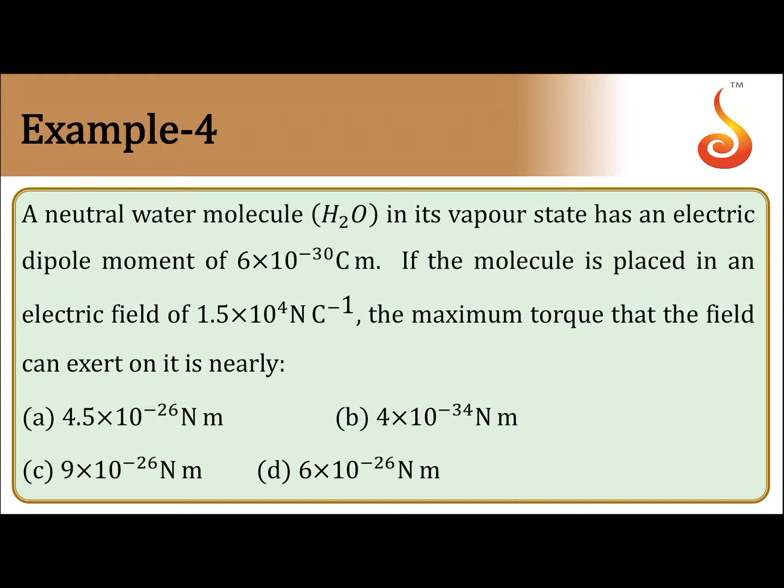If the molecule is placed in an electric field of 1.5 into 10 to the power 4 newton per coulomb, the maximum torque that the field can exert on it is nearly: 4.5 into 10 to the power minus 26, 4 into 10 to the power minus 34, 9 into 10 to the power minus 26, 6 into 10 to the power minus 26 newton meter.